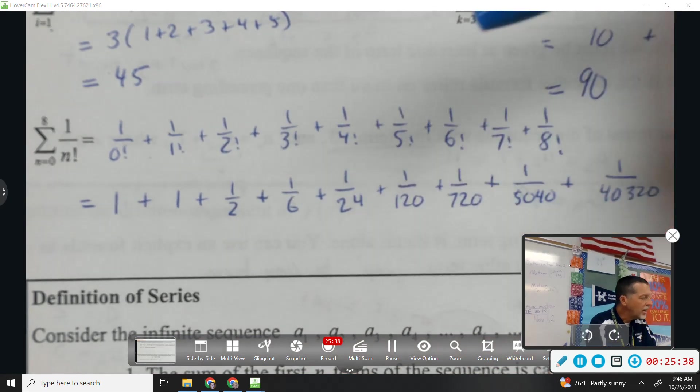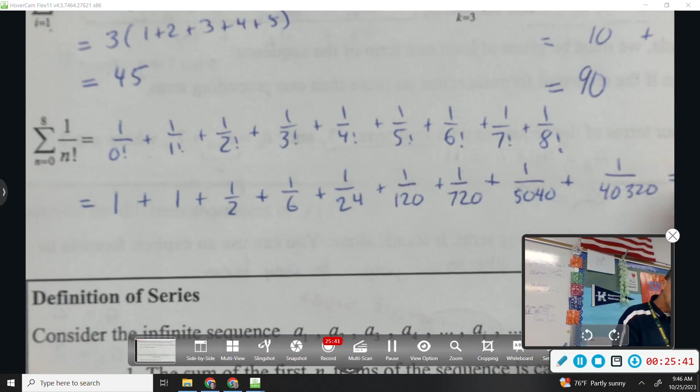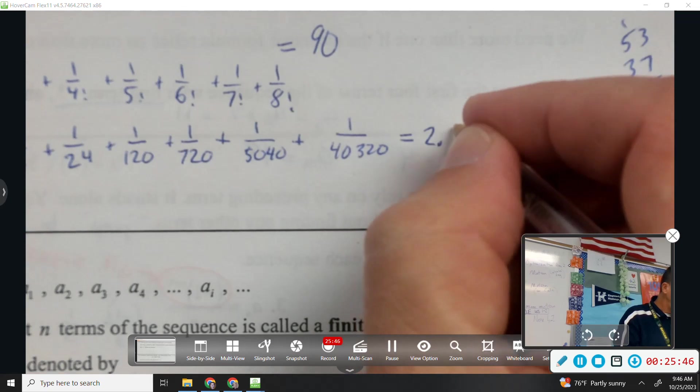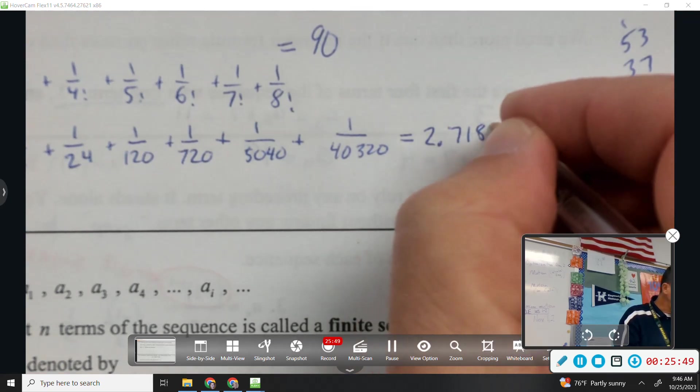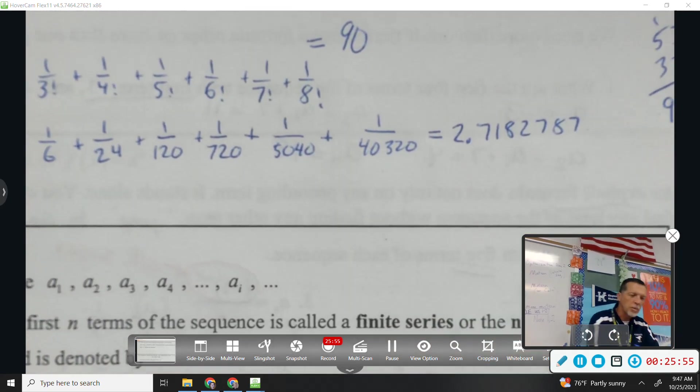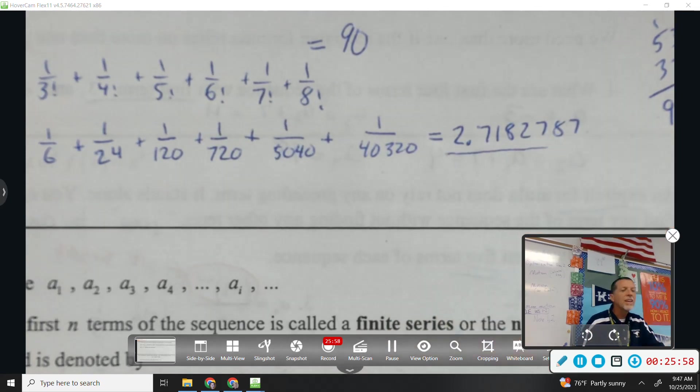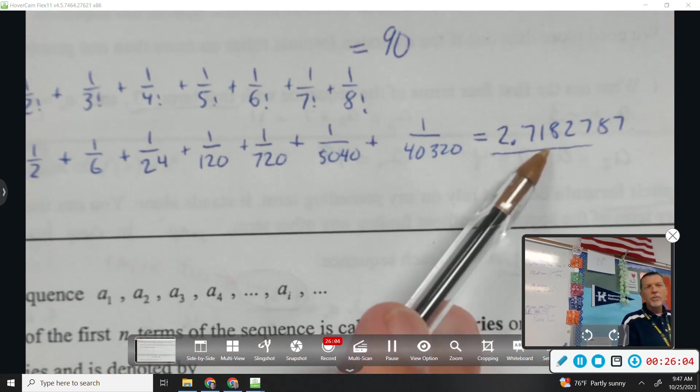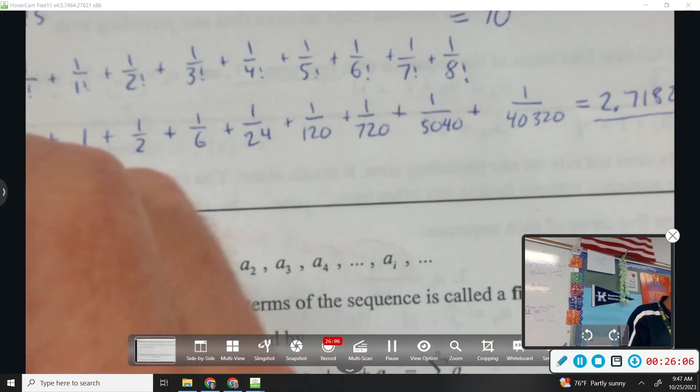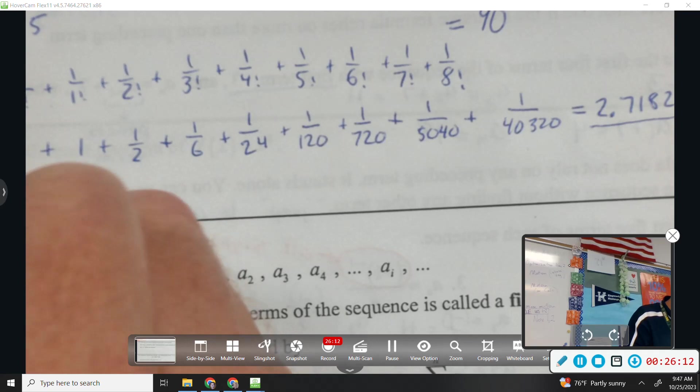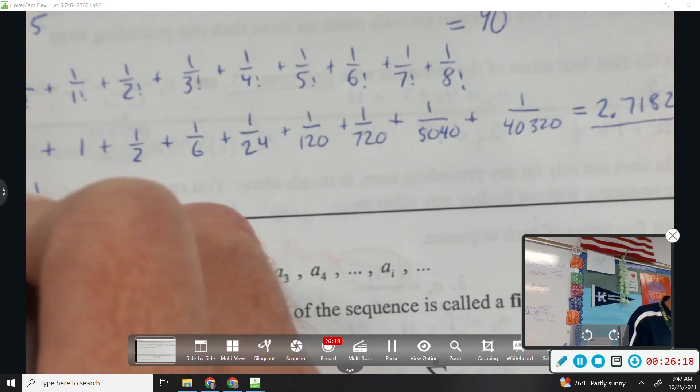The point of that one is that if you kept going, actually, let me show you what this is equal to. Again, with the calculator. Here, 2.7182787. You may recognize that number at least to the first. E. Now, we stopped at 8, so that's not really E. That's a little bit short of E. We'd have to keep adding them up. So this is kind of a calculus thing. E is the sum from N equals 0 to infinity of 1 over N factorial.